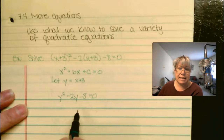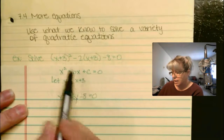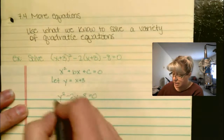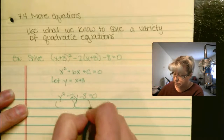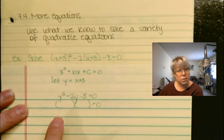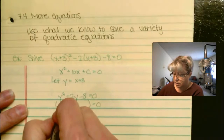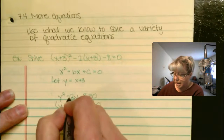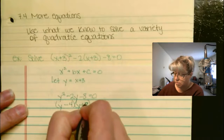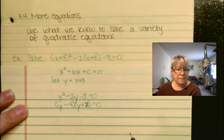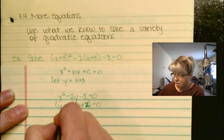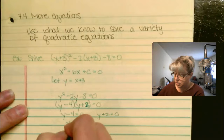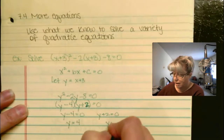Now certainly, y squared minus 2y minus 8 is a lot simpler looking than x plus 3 squared minus 2 times x plus 3 minus 8. So let's go ahead and factor and solve our simpler quadratic equation. Two numbers that multiply to negative 8 but add to negative 2 — that gives us y minus 4 and y plus 2. Now let's solve: y minus 4 equals 0 and y plus 2 equals 0, giving us y equals 4 and y equals negative 2.